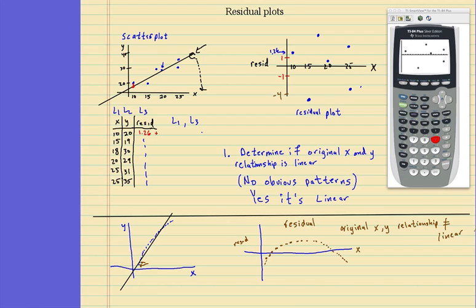So whenever you're given a problem, generally, they'll give you the scatter plot, or they'll give you the residual plot as a scatter plot. And then, they'll say, what can you say about the original X and Y's? Then, you'd say, since the scatter plot exhibits no obvious patterns, the relationship between X and Y is linear.